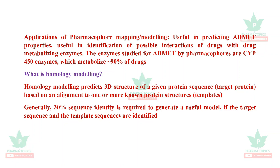What is homology modeling? Homology modeling predicts the 3D structure of a given protein sequence — the target protein — based on alignment to one or more known protein structures, called templates. If you don't know the protein structure, you can use homology modeling. Generally, 30% sequence identity is required to generate a useful model. This has been a brief overview of virtual screening.